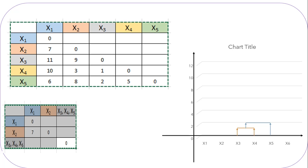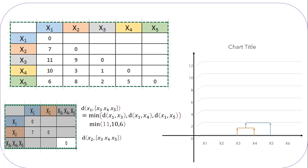The diagonal will be 0 as distance from its own point is 0. Distance from x2 to x1 will be 7. Now we have to calculate distance from cluster x3-x4-x5 to x1 and to x2. We check distance from x3 to x1 (11), x4 to x1 (10), and x5 to x1 (6), and the minimum among all three is 6. So the distance from cluster x3-x4-x5 to data point x1 will be 6.